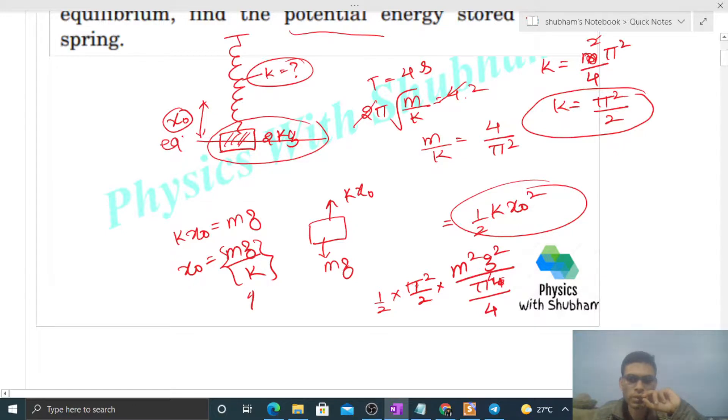So we need to solve this. So see, π² by 4 will cancel. So here we get π² by 2, and if we solve this further, m²g², 1 by 2, and here π², and this 2 will go up, right?